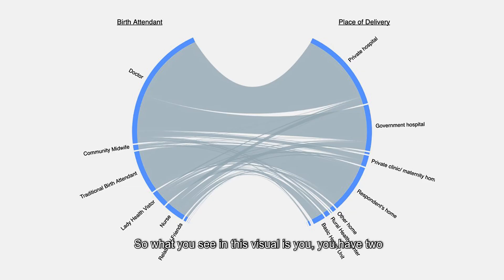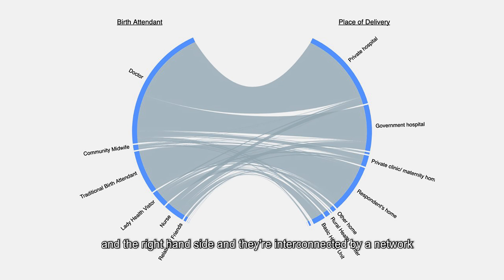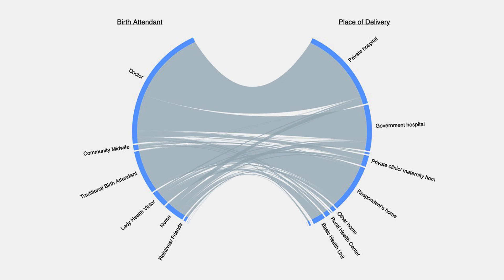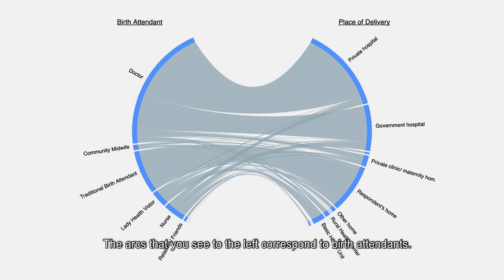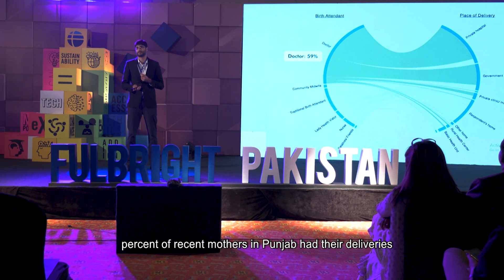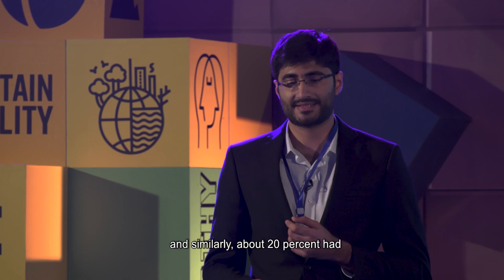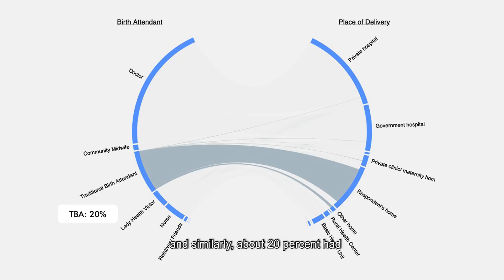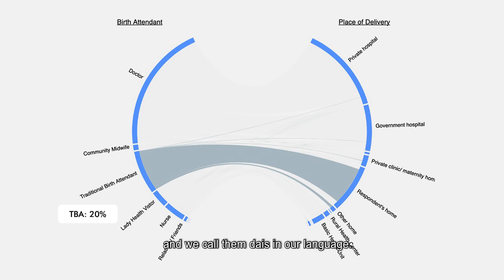What you see in this visual is two sets of blue-colored arcs on both the left and right-hand side, interconnected by a network of gray ribbons in between. The arcs to the left correspond to birth attendants — for example, one corresponds to doctors, and its size tells us that 59% of recent mothers in Punjab had their deliveries assisted by doctors. Similarly, about 20% had their deliveries assisted by traditional birth attendants, called dais.